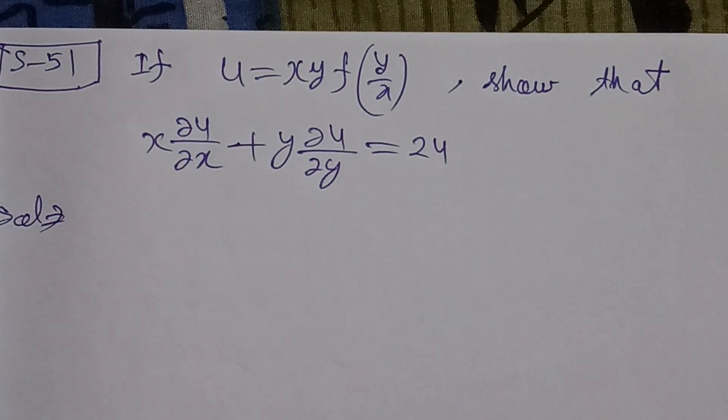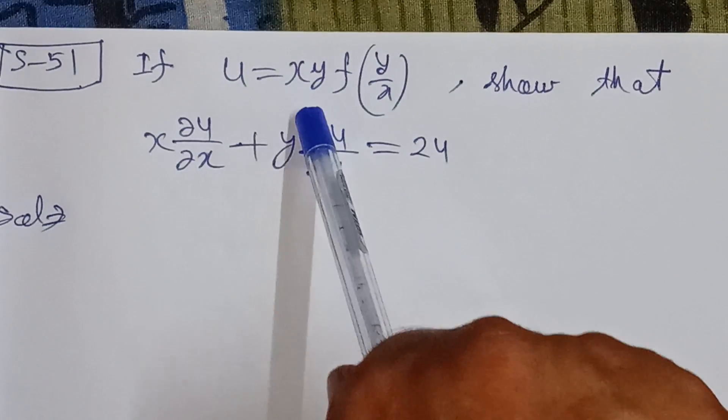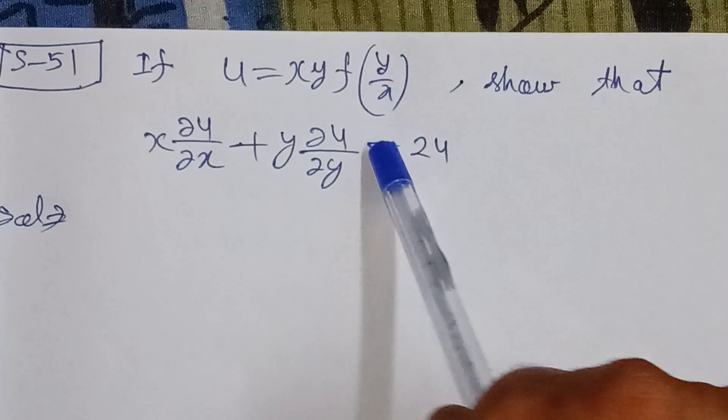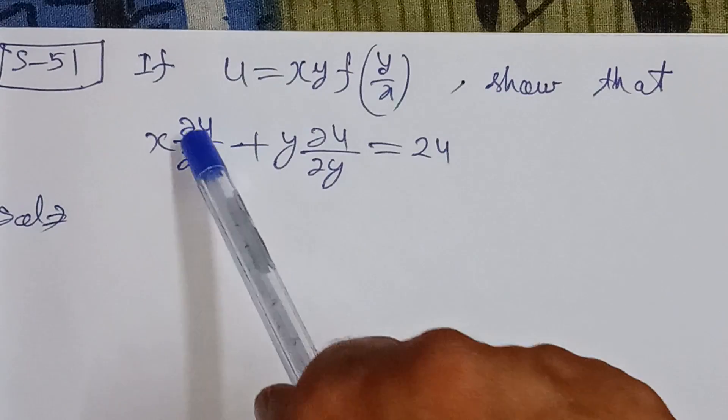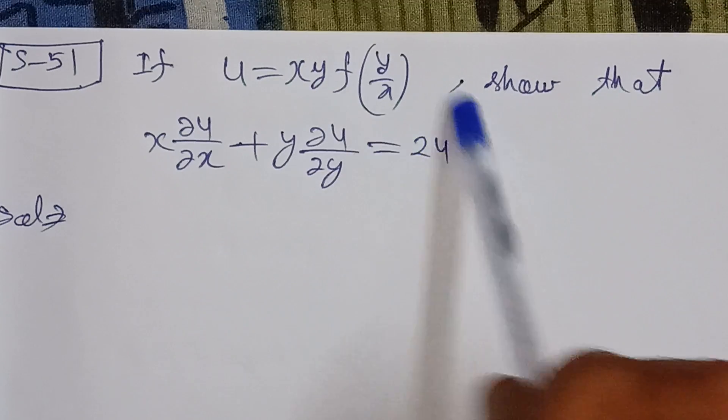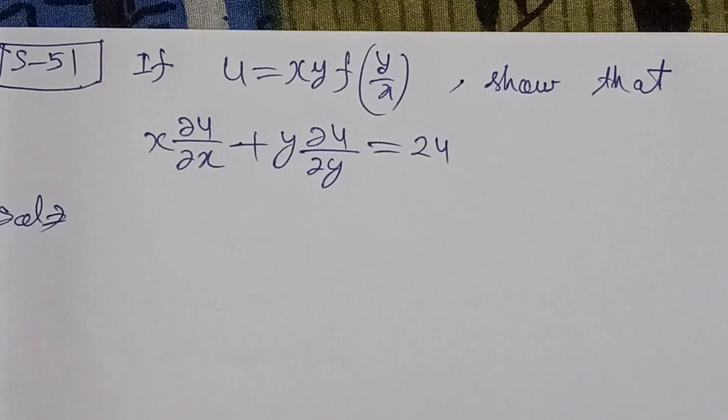Bismillahirrahmanirrahim. This problem is from differential calculus, the partial differentiation chapter. If u equals x times f of y upon x, where f is a function of y upon x, show that x del u over del x plus y del u over del y equals 2u.